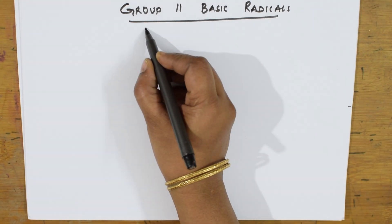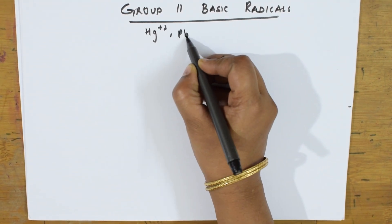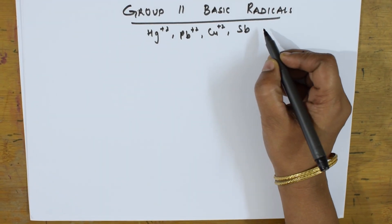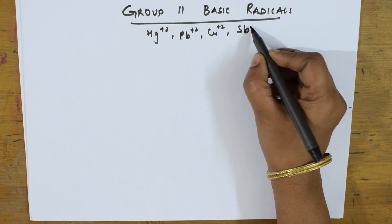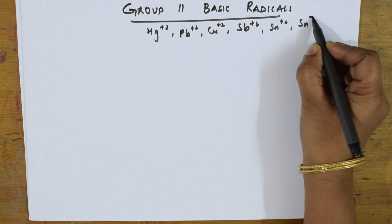In Group 2, the cations which precipitate out are Hg²⁺, Pb²⁺, Cu²⁺, Sb³⁺, Sn²⁺, and Sn⁴⁺.